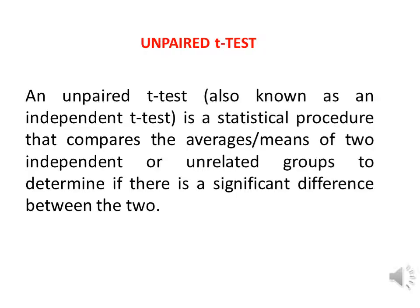An unpaired t-test, also known as an independent t-test, is a statistical procedure that compares the averages or means of two independent or unrelated groups to determine if there is a significant difference between the two. It means the two-sample t-test is used to compare the means of two different samples.